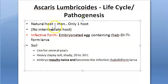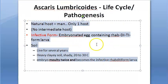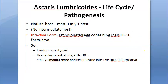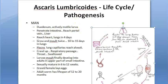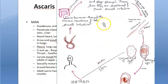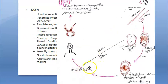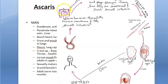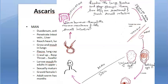Moving to the life cycle and pathogenesis: man is the natural host and there is no intermediate host. The worm can live in the soil for several years. The infective form is the embryonated egg containing the rhabditiform larva. In the soil, it undergoes two molts. When a man eats vegetables contaminated with this rhabditiform larva, it goes to the duodenum, burrows into the mucosa, enters the blood, and travels via the portal vein to the liver.